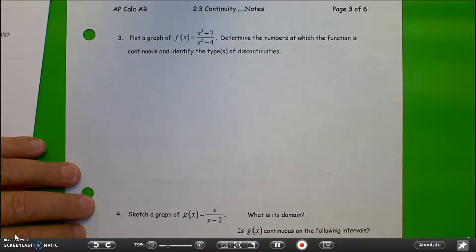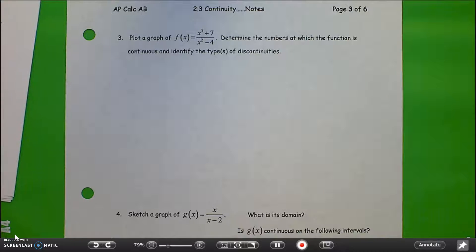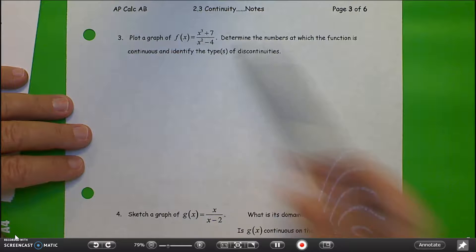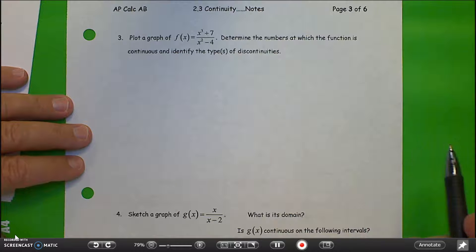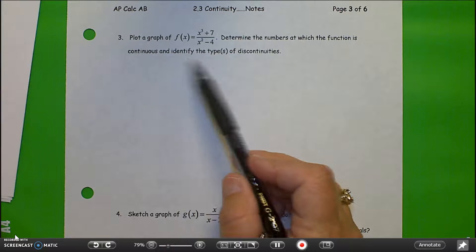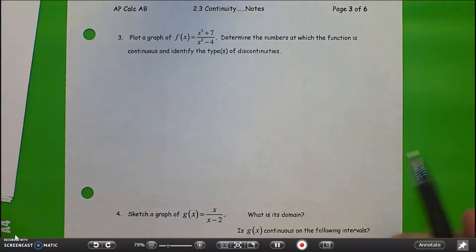We're going to continue with calculus section 2.3 on continuity. We're on page 3. We're asked here to plot a graph of f(x) equals x cubed plus 7 divided by the quantity x squared minus 4. Our task is to determine the numbers at which the function is continuous and identify the types of discontinuities.